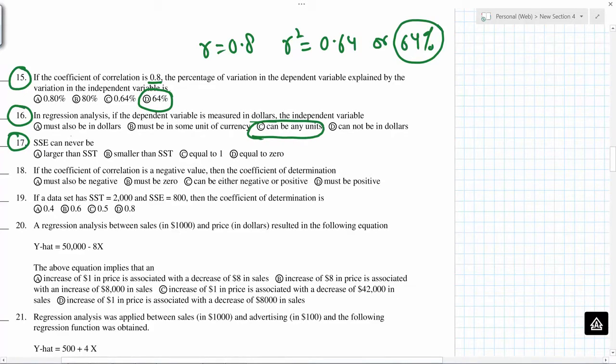Sum of squares due to error, SSE can never be larger than the total sum of squares or sum of squares due to total.